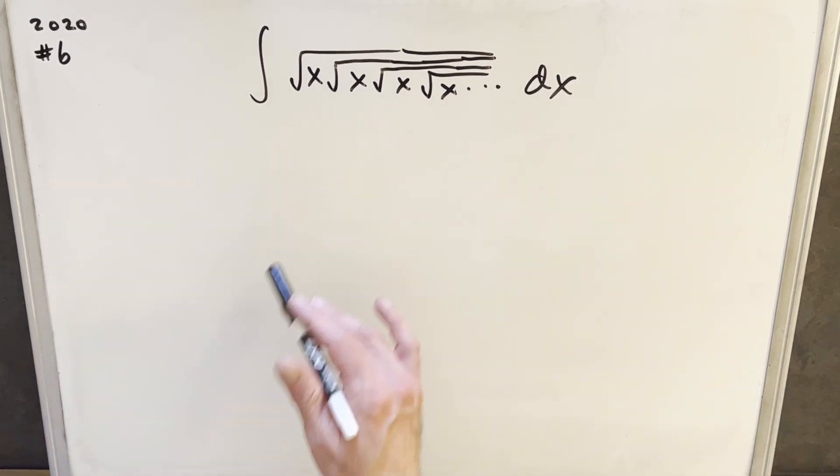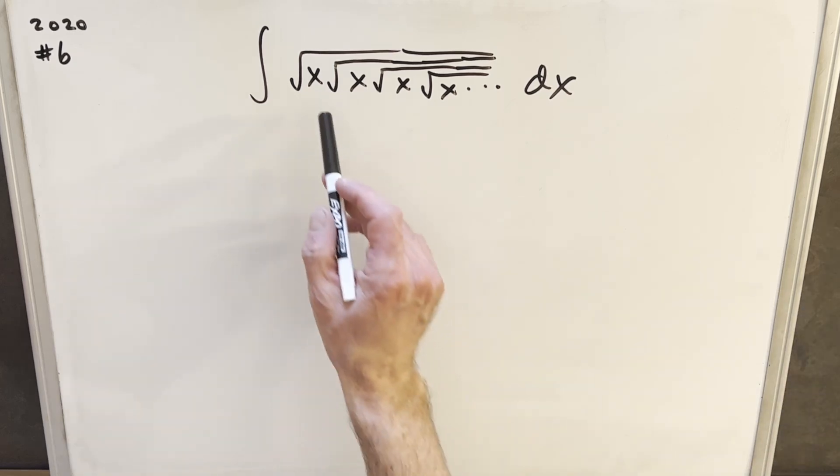Not sure how to pronounce all this, but you just got an infinite nested radical with X. This goes on forever. I thought this was a very interesting problem. Now there's not a lot for us to do as far as calculus or algebra. It's really all about what we can do to interpret this nested radical situation.